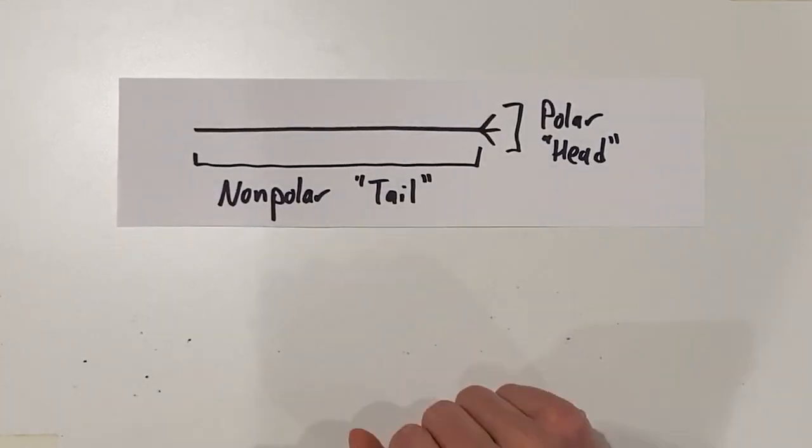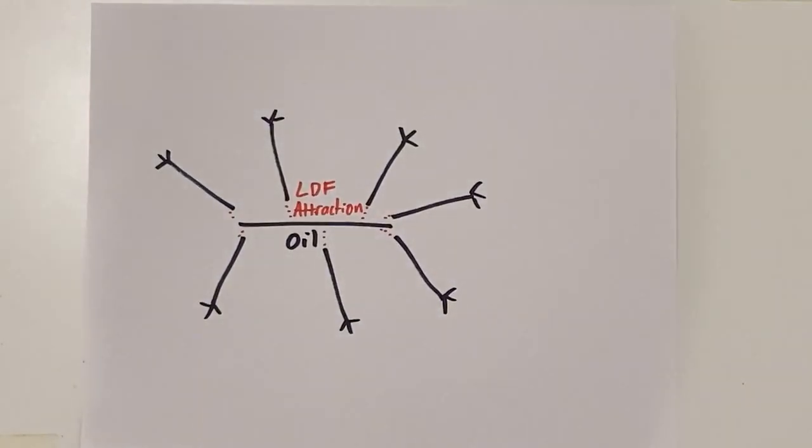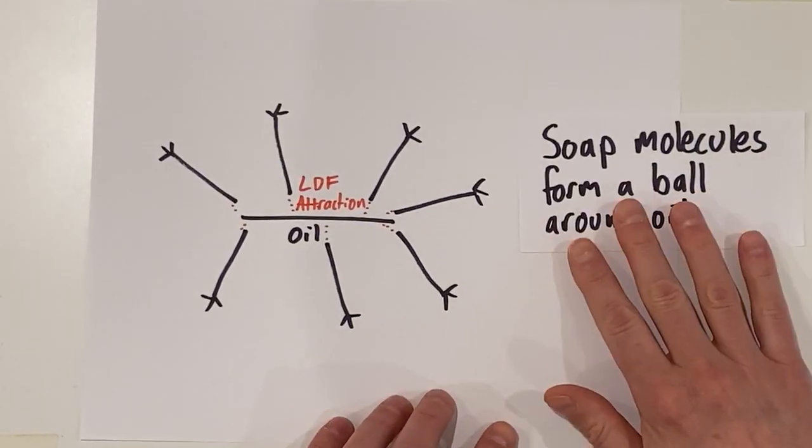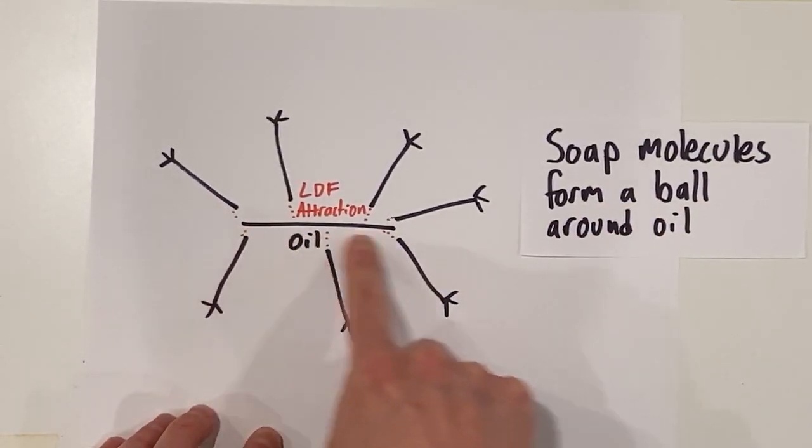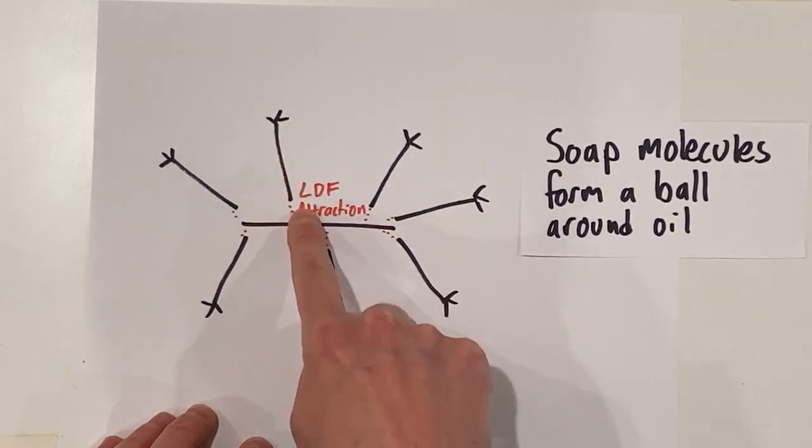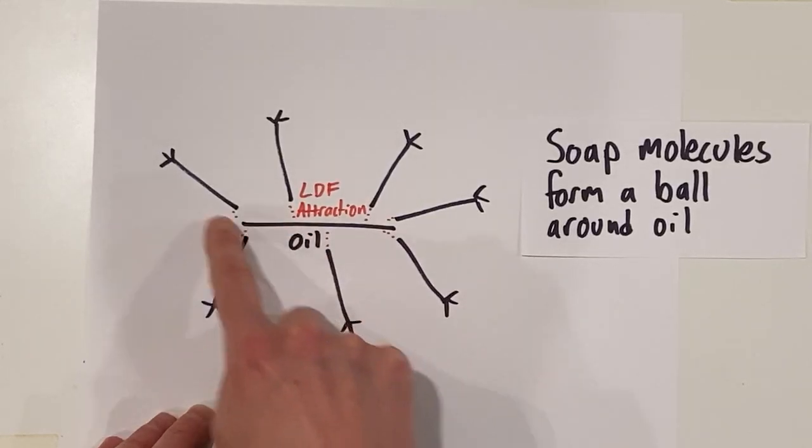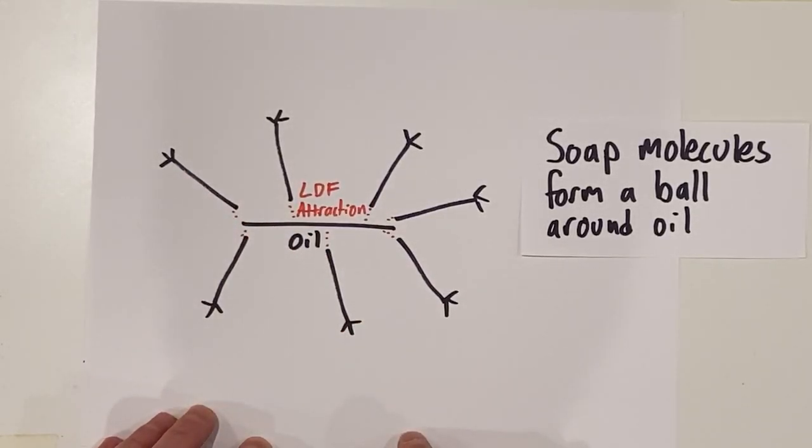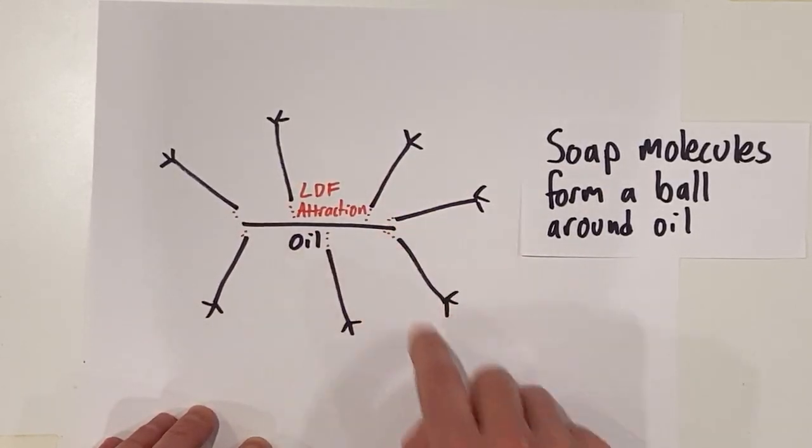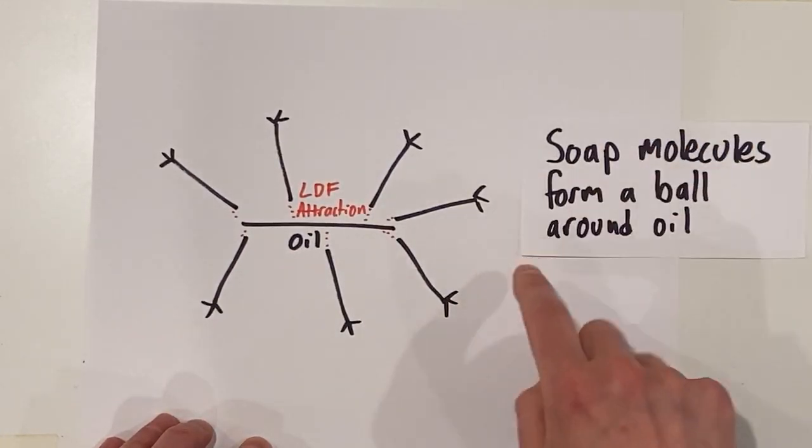How is soap going to clean and make bonds with both oil and water? Here's what's going to happen. Our soap molecules are going to essentially form a ball around the oil. If we have a long string of carbon hydrogen molecules like in mineral oil, the soap will form LDF attractions with its non-polar parts. The oil is non-polar and the tail of the soap is non-polar, and we're going to make LDF attractions. So the oil and the soap will get attracted together.